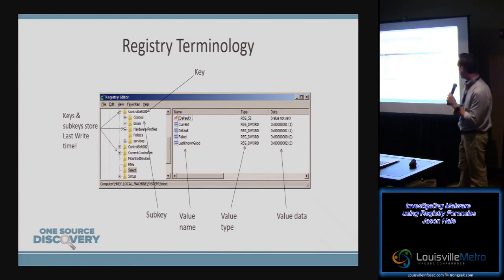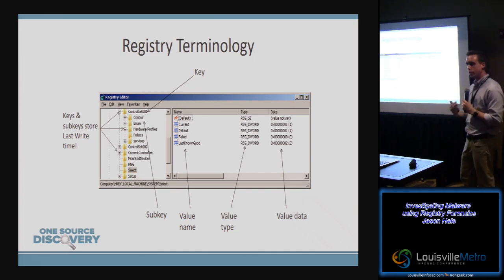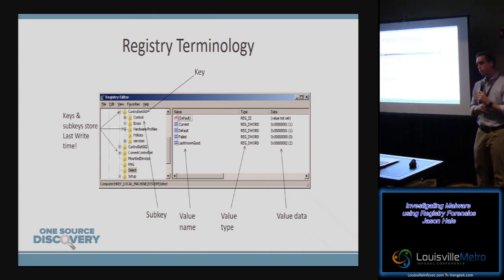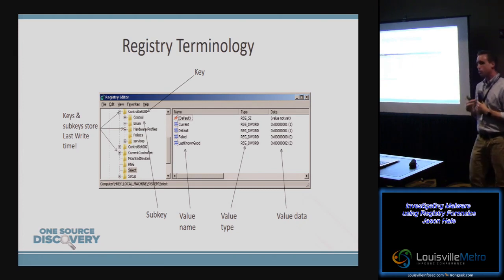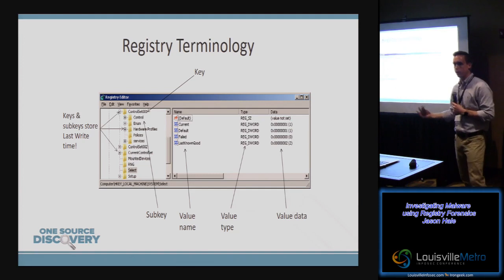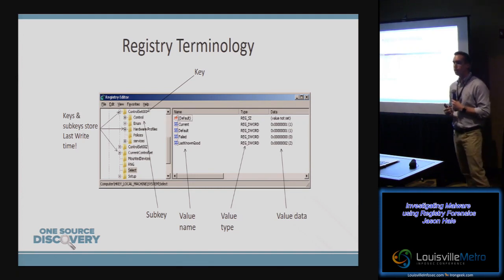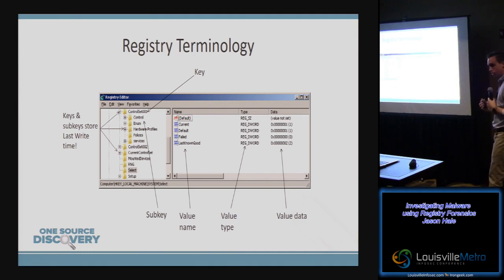To go over some quick terminology: the registry is composed of keys, subkeys, and values. You can equate that to the idea of folders, subfolders, and files in a file system. A registry key may contain either subkeys or values. Registry keys are unique in that they also contain a last write time, which can be equated to a last modify time. We don't have creation time or access time — those typical file system timestamps — but we do have a last modify time, which tells us when something last changed with a particular registry key.